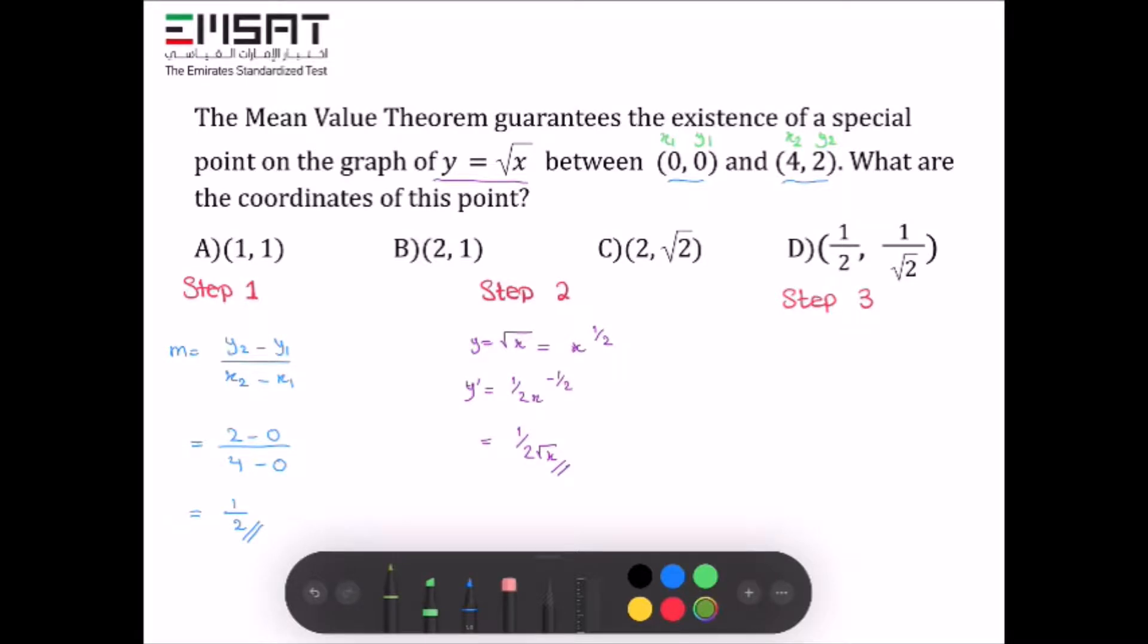We have the slope of the secant line, which is 1/2, equals the slope of the tangent line, which is 1/(2√x). In mathematics, we can flip the fraction, and we end up with 2 = 2√x.